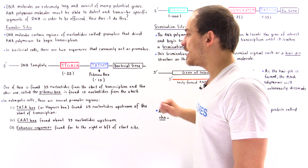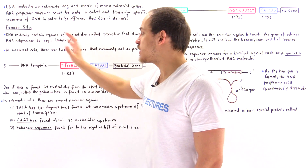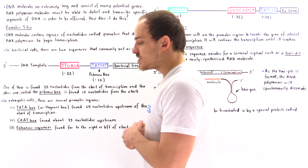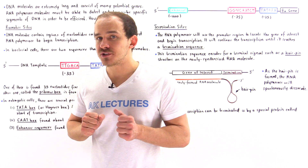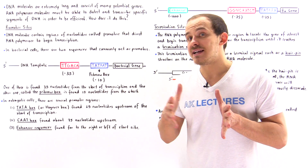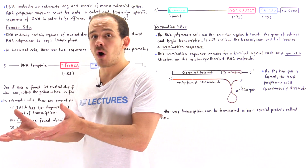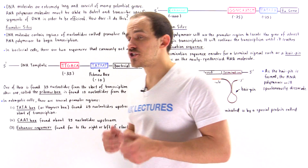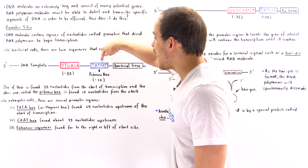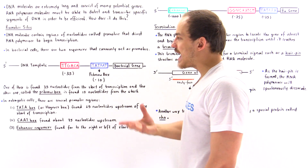The negative simply means it is to the left — upstream with respect to that bacterial gene. This sequence is known as the Pribnow box. The Pribnow box contains a consensus sequence that doesn't change from one organism to another, and that sequence is TATAAT, where T is thymine and A is adenine.